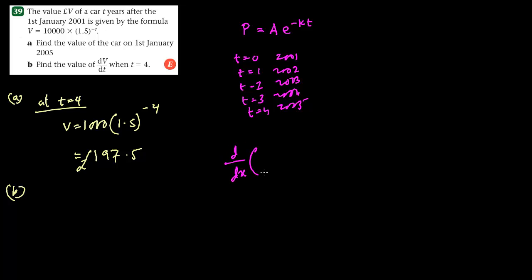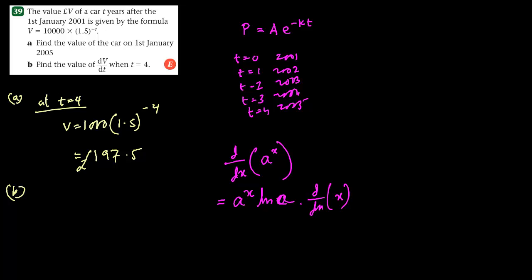The derivative of d by dx of any constant to the power x is an exponential function. If we have the number 2.71828, that is e, we call it the natural exponential function. So this is just another exponential function. The derivative would be a to the power x times ln a. And there always has to be a chain rule for the algebraic portion.